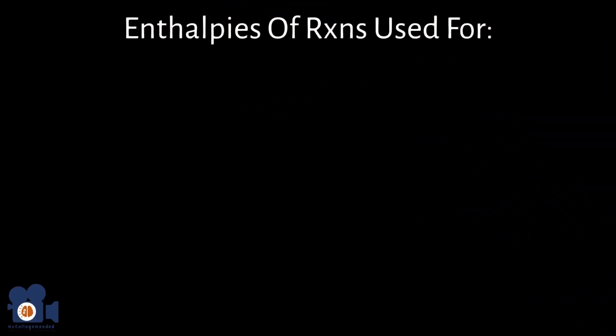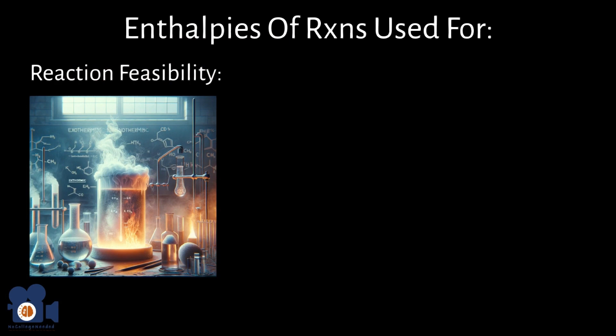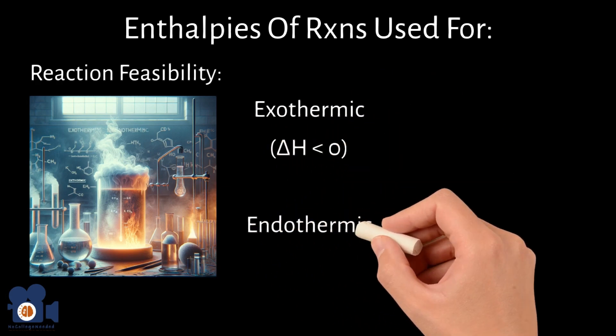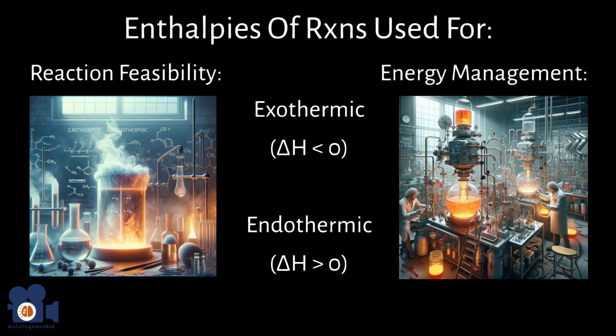Enthalpies of reactions are used in chemistry for a variety of important purposes. Some of these include predicting the reaction feasibility or determining exothermic slash endothermic reactions. For this, chemists assess whether a reaction is exothermic, delta H is less than zero, or endothermic, delta H is greater than zero. Using these, chemists can gauge the spontaneity of a reaction under certain conditions, although entropy and temperature also play a significant role in determining spontaneity through Gibbs free energy, which we'll discuss at a later time. Energy management. Understanding energy changes in chemical reactions allow chemists and engineers to design processes that are energy efficient, either by minimizing energy input for endothermic reactions or harnessing energy released from exothermic reactions.